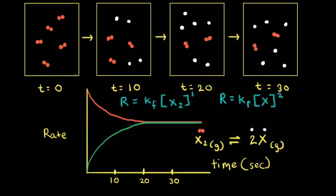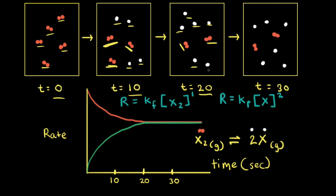Let's look at these particulate diagrams and think about what happens for the forward reaction. At time equals zero, we start with only five particles of X2. After 10 seconds, we've gone from five particles of X2 to only three, so two particles of X2 have turned into X, giving four particles of X. At time equals 20 seconds, we're down to two particles of X2 and up to six particles of X.